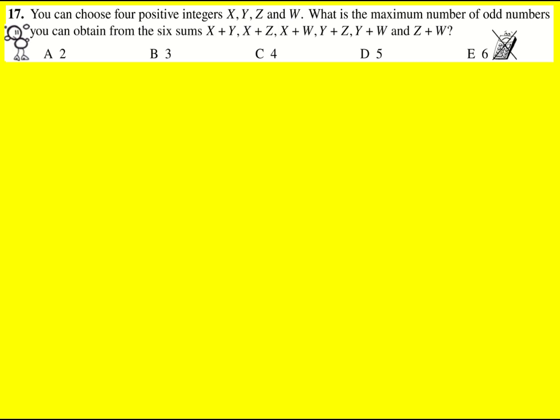We could make them all even but then actually get zero odd numbers when you add them, so that's not going to be a possibility and the same for all of them being odd. So we need to think about what if one of them was even and three of them were odd.